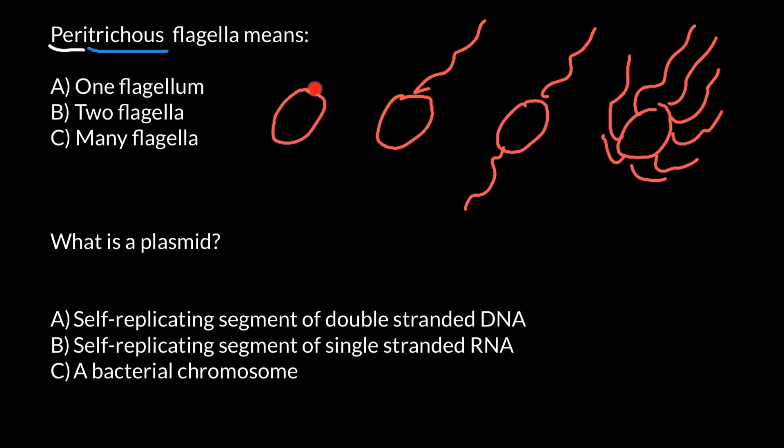We can also label them A, B, C, D. Here's a hint for you: the first type of bacteria we can call Atrichus. So the second type would be Monotrichus — also easy to memorize.